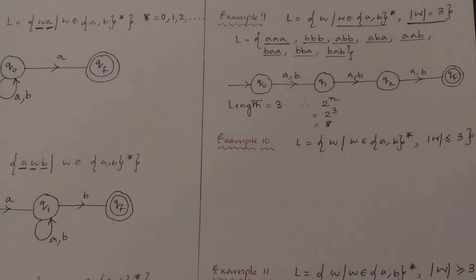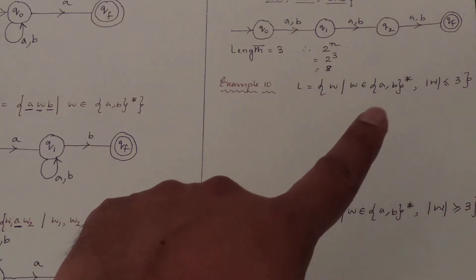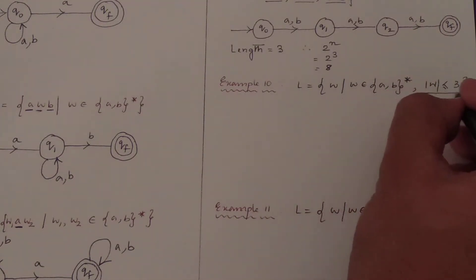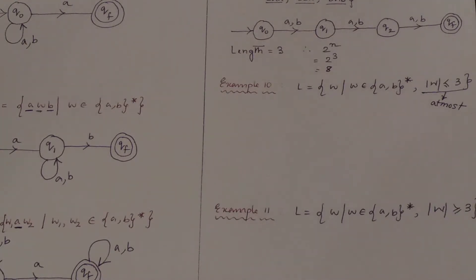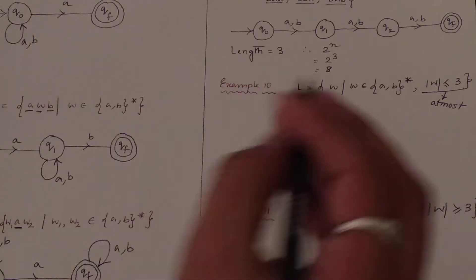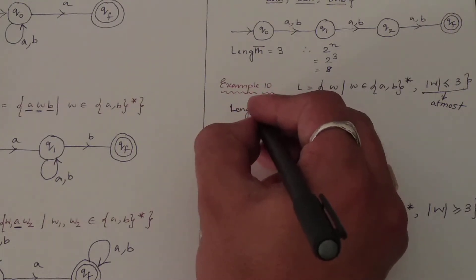Now let's move to the other language. This says: w where w belongs to {a, b}* and the length of w is less than or equal to 3. This can also be referred to as 'at most 3' — length is at most 3. The concept is the same. So what strings are available? Let me check the lengths: the length will be 0, 1, 2, and 3.